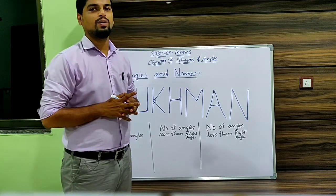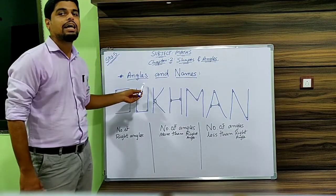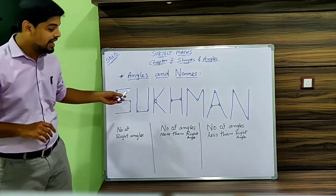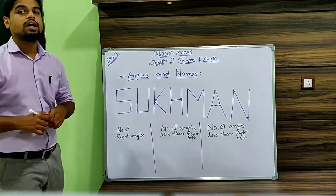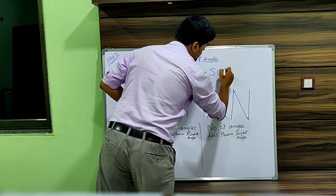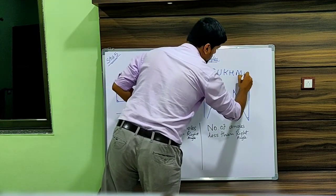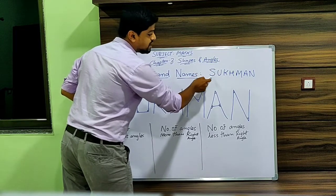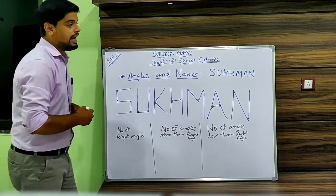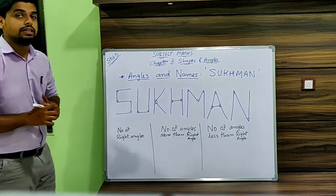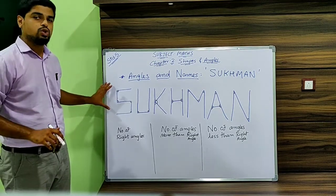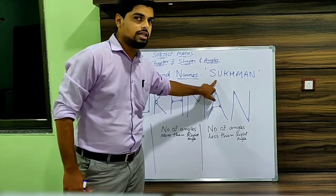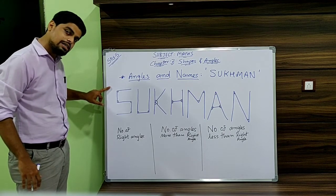Hello students, today we are going to learn a topic named 'angles in names.' Yes, names do have angles, but when they are represented in straight lines. If you have a given name like 'Sukhman,' this name is created using curves, so the name must be written using straight lines. In most cases the name will be given like this, but if a name is given in curves, you have to rewrite it using straight lines.